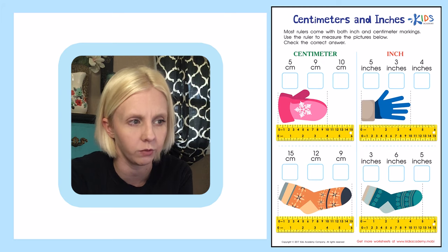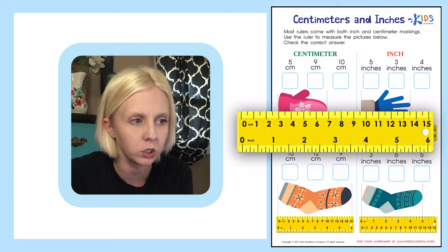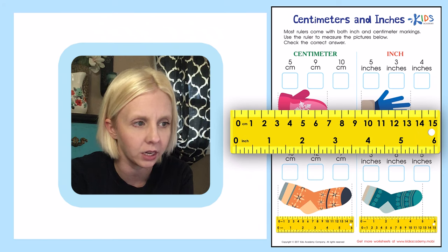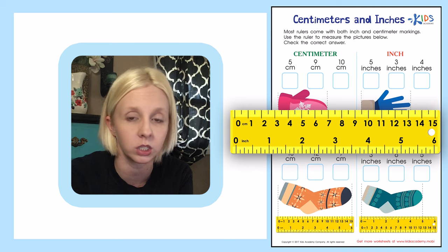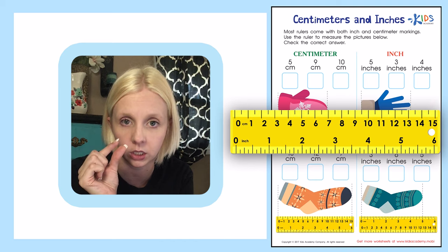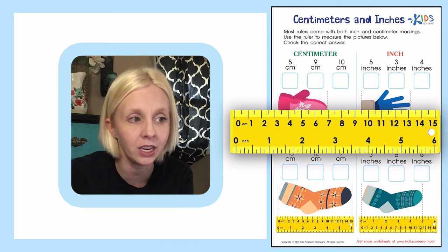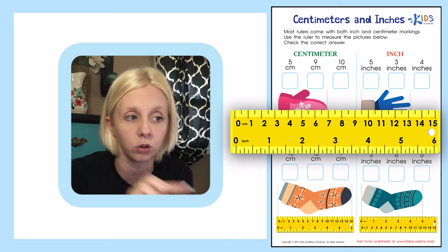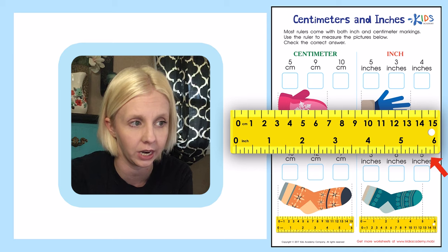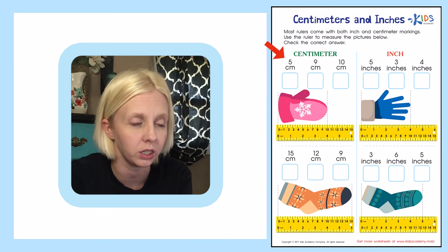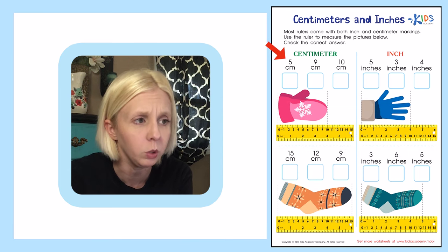When I look at this ruler I see that the small ones are all going to be the centimeters — the centimeters are the smaller markings that are really close together. The inches are a little bit bigger and wider. So these are the inches down here.